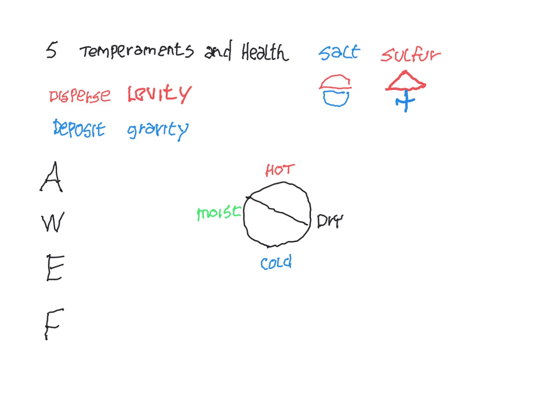In that four elements theory, the movement between earth and water, water and air, is known as the temperament. And tempering means balancing. So earth needs to balance dry and cold, water needs to balance cold and moist.